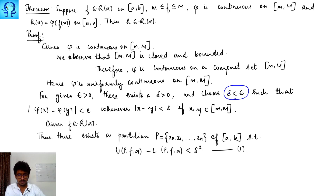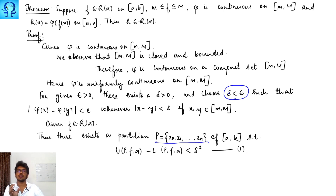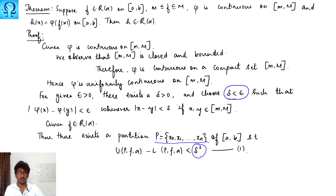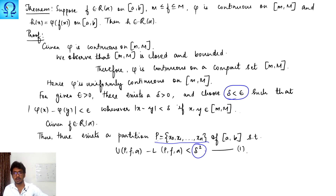Given f is Riemann-Stieltjes integrable, by the necessary and sufficient condition of RS integrability, there exists a partition P such that U(P,f,α) minus L(P,f,α) is a very negligible quantity. Here we choose that negligible quantity to be δ², rather than ε or some other name — we are simply naming the negligible quantity δ².